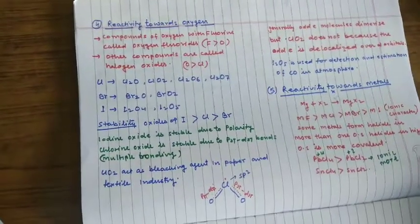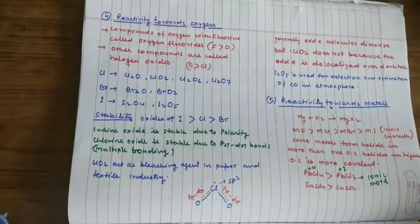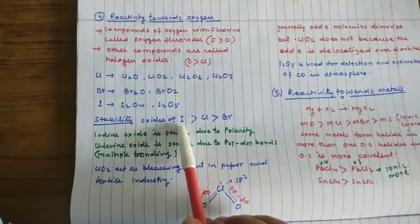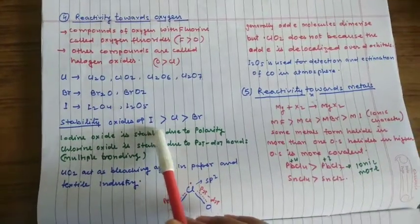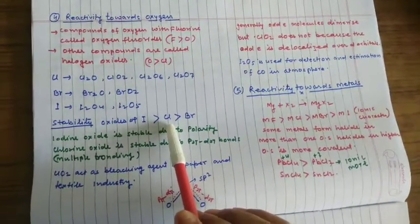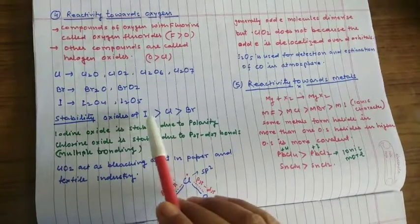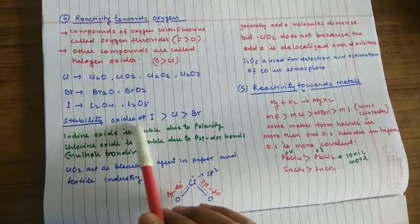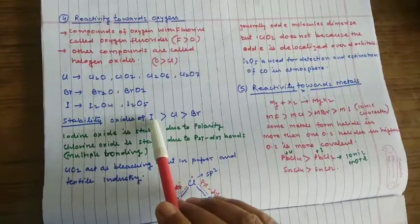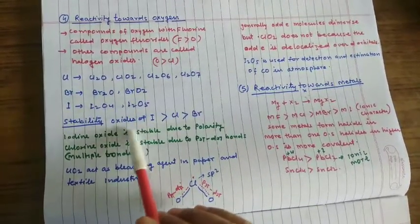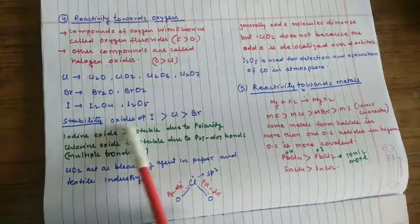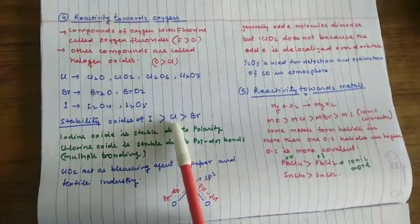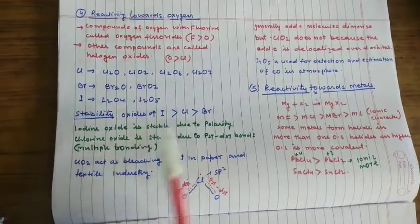If we see the stability of different halogen oxides, then the stability of oxides of iodine is larger than chlorine, is larger than bromine. This is due to the longer bond length between iodine and oxygen. It has greater dipole moment, which accounts for its higher stability. In case of chlorine, oxides are stable due to multiple bonding.